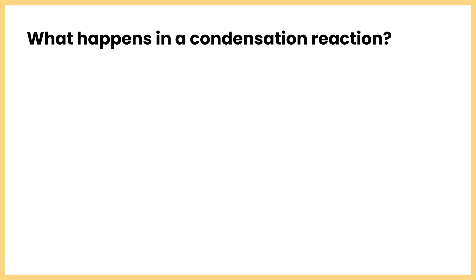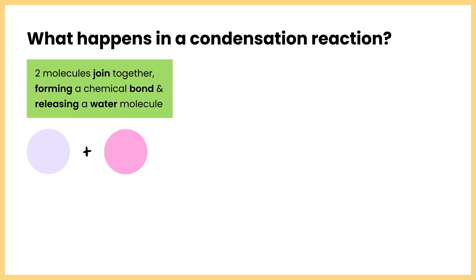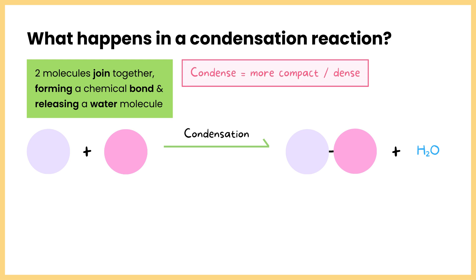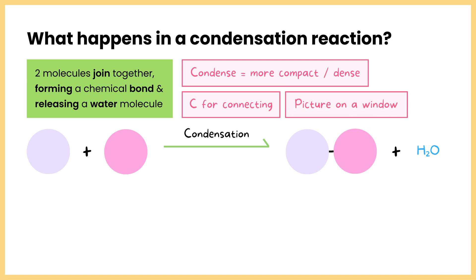In a condensation reaction, two molecules join together forming a chemical bond and releasing a water molecule. A few ways to remember that: firstly, break down the word — it's got the word condense in it, which means to make something more compact or dense, which makes sense if you're joining two molecules together. Or, condensation starts with the letter C and you can think C for connecting molecules. You can also associate the water molecule being released with condensation in real life, like water droplets on a window.